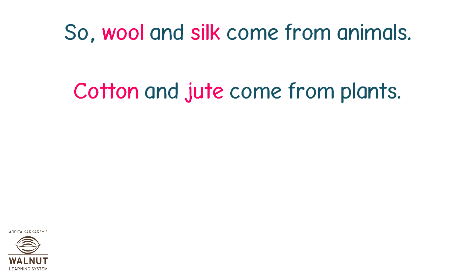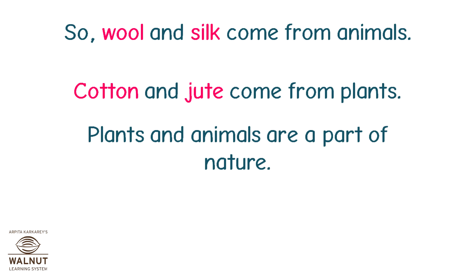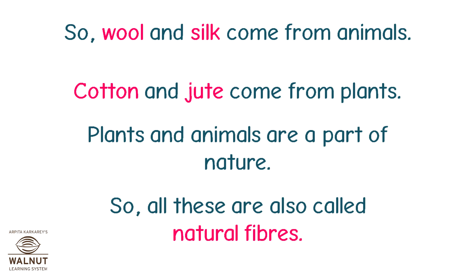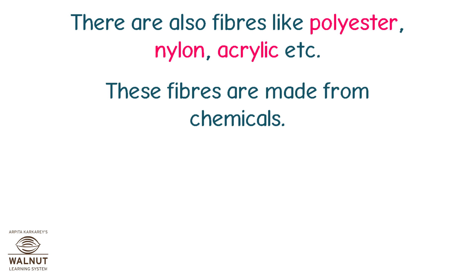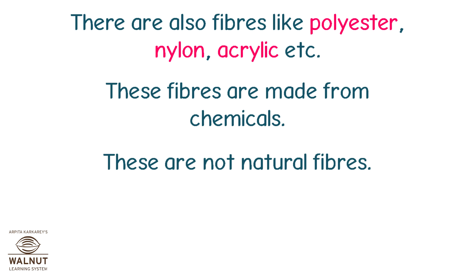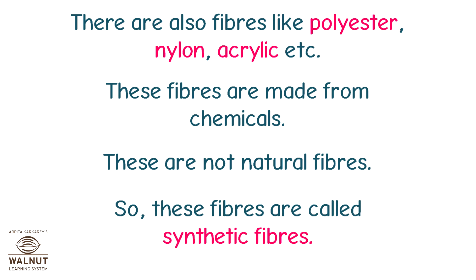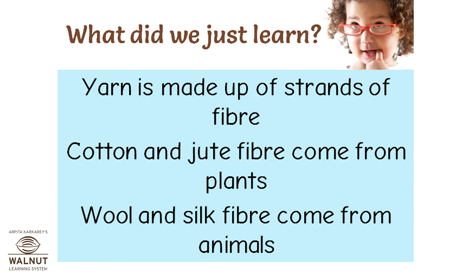Cotton and jute come from plants. Plants and animals are a part of nature, so all these are called natural fibres. There are also fibres like polyester, nylon, acrylic, etc. These fibres are made from chemicals and are not natural fibres, so these fibres are called synthetic fibres.